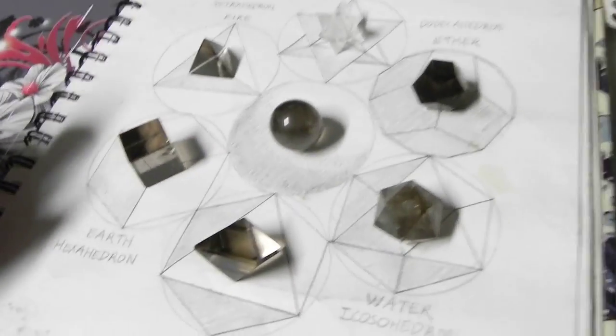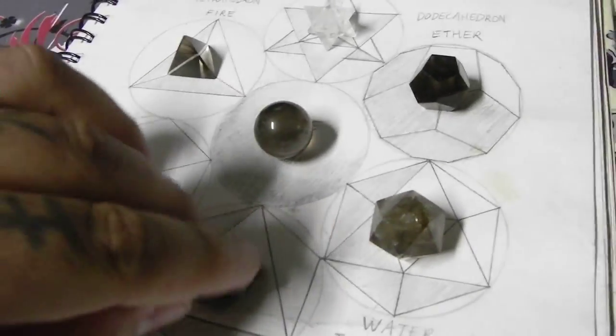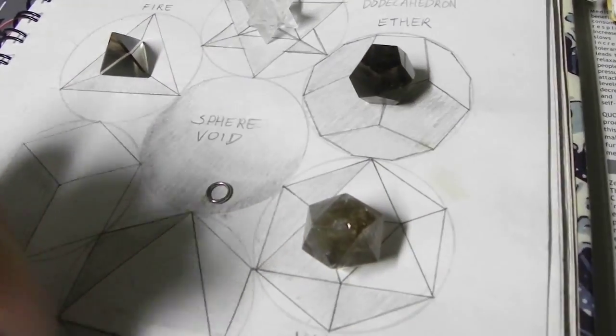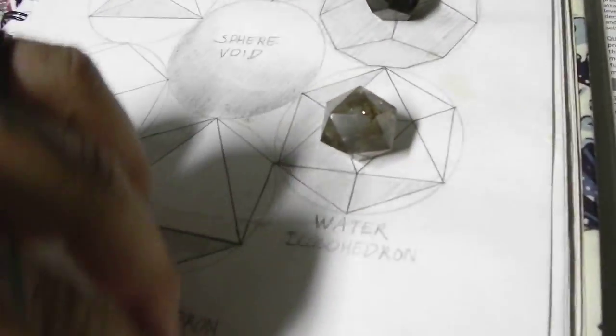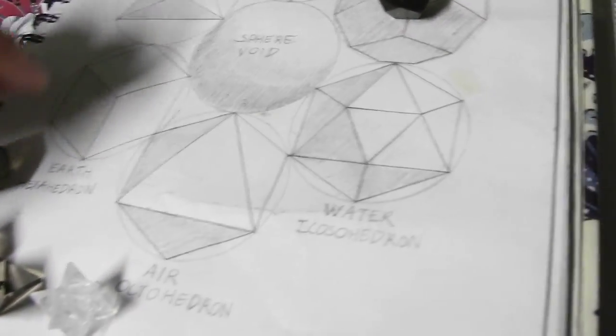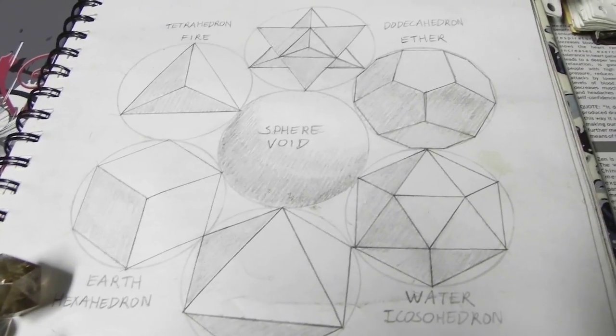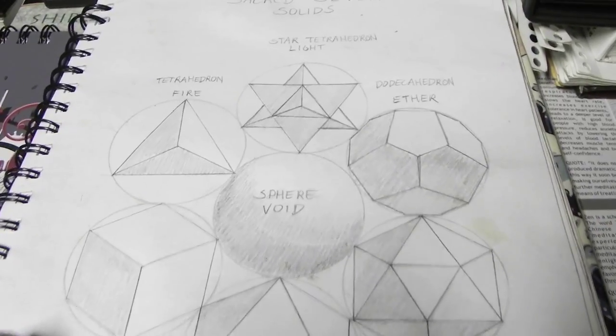First we have here is a grid that I've drawn. If I take all these crystals off here, you can see what this grid is. I call it the sacred seven because this has all of the five platonic solids plus the sphere and the star tetrahedron.